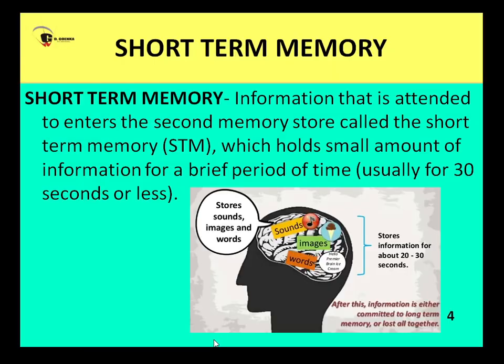Next we have the short-term memory. When we talk about short-term memory, we don't really pay attention to everything that's coming into our brain — each and every piece of incoming information. We're not paying attention to everything, because if we did, our brain would get overloaded. Our memory would literally be overwhelmed. So it happens very naturally that we don't tend to pay attention to everything — not all the information that strikes our senses.